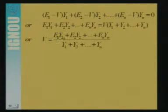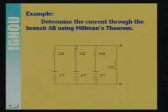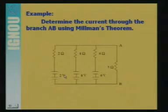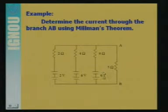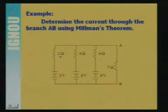You can put the known values E1, Y1, etc. to get the value of V, the equivalent voltage source from Millman's theorem. Now we will see one question based on Millman's theorem: determine the current through branch AB using Millman's theorem. The network has sources of 2 volt, 4 volt, and 6 volt with internal impedances of 2 ohm, 4 ohm, and 6 ohm respectively, all connected in parallel. We apply Millman's theorem to find the equivalent circuit across terminal AB.